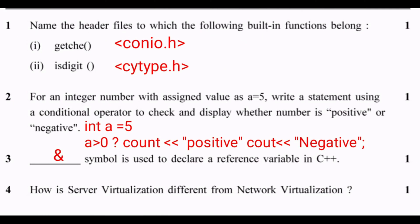Question 1: Name the header files to which the following built-in functions belong. 1. getch() belongs to conio.h. 2. isdigit() belongs to ctype.h. For an integer number with assigned value a = 5, write a statement using a conditional operator to check and display whether the number is positive or negative: int a = 5; (a > 0) ? cout << "positive" : cout << "negative". The % symbol is used to declare a reference variable in C++.